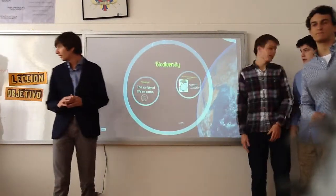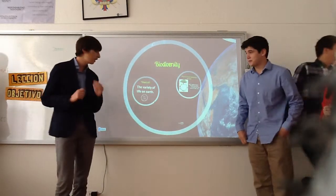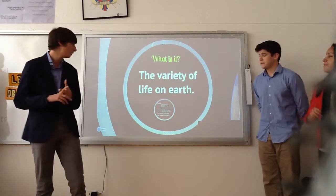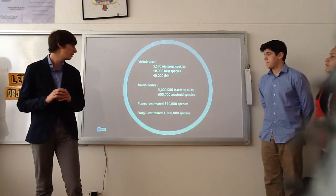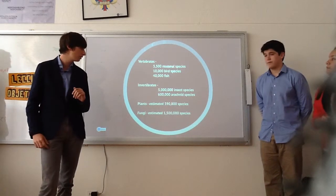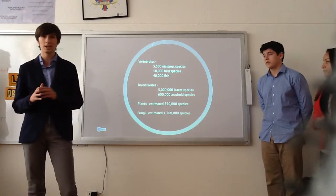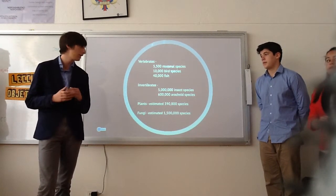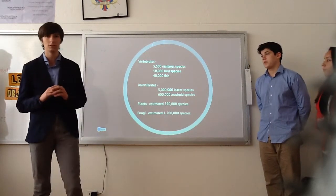So, biodiversity — what is biodiversity? Basically, biodiversity is the variety of life on Earth. It includes plants and animal species. This includes around 5,500 mammal species, 10,000 bird species, and 40,000 fish species. It also includes around 5 million insect species. And scientists believe that in total, there are about 13 million plant and animal species,